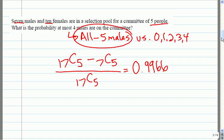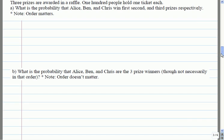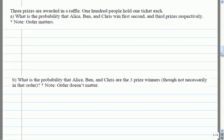Okay, so now I want you to think about how you do your counting and what matters, what doesn't. Say you have three prizes in a raffle and a hundred people have one ticket. What's the probability that Alice, Ben and Chris win first, second and third prize? Now I've told you here at the beginning, note that order matters because I'm assigning the prize to each person. But it's a good question here to compare part A and part B to see if you can figure that out on your own.